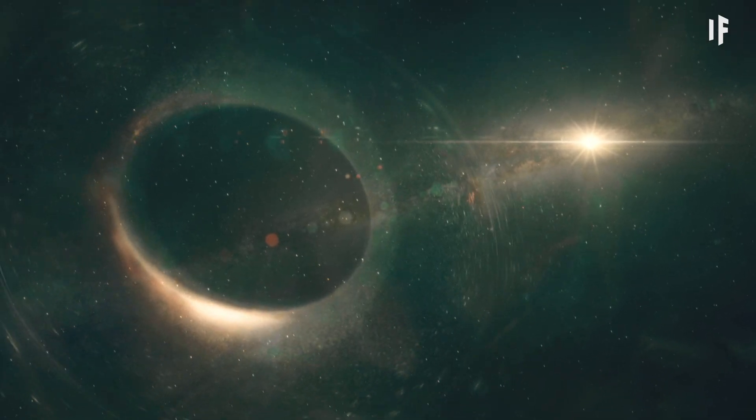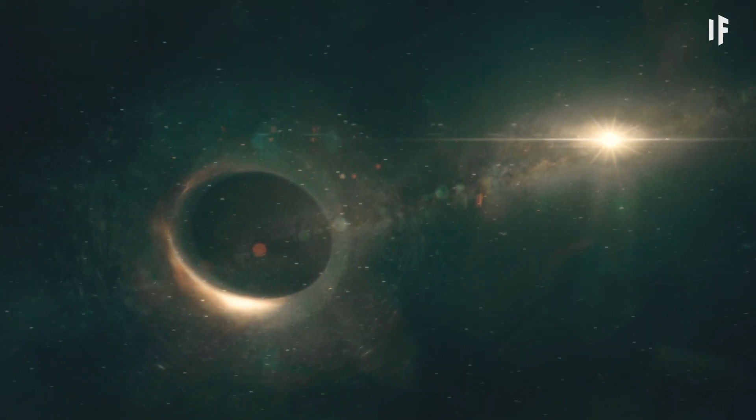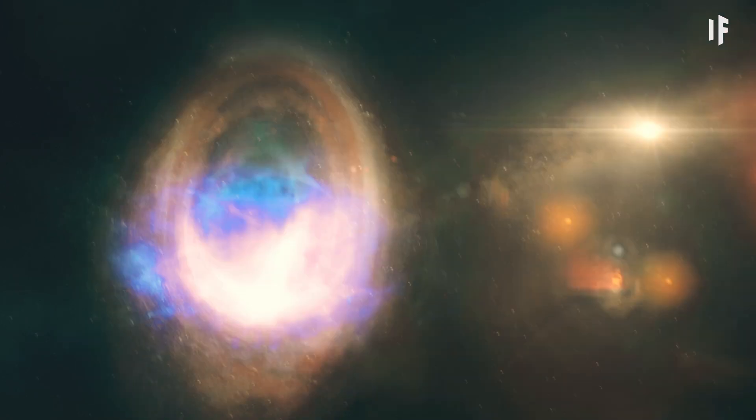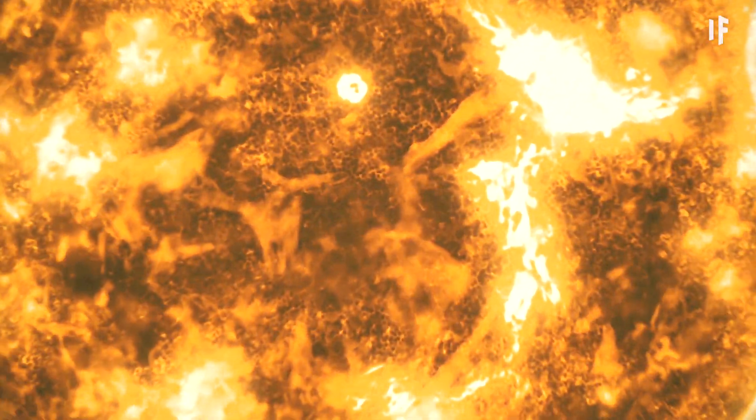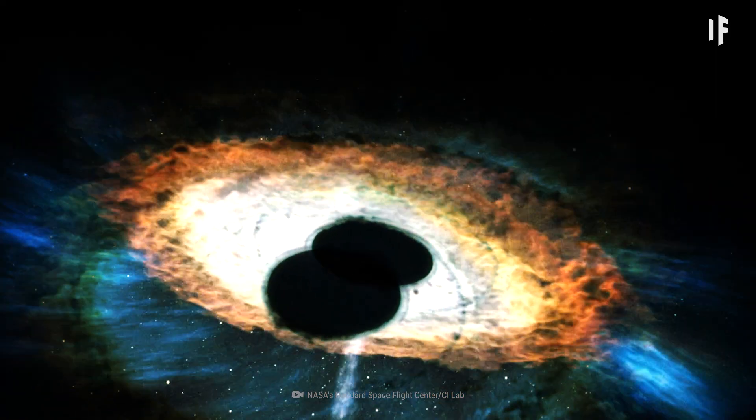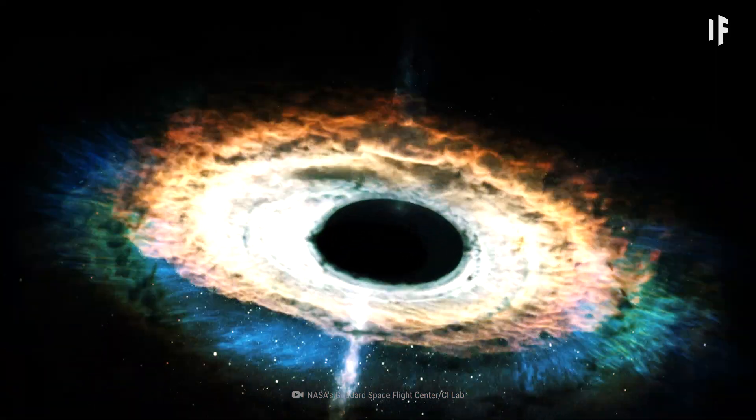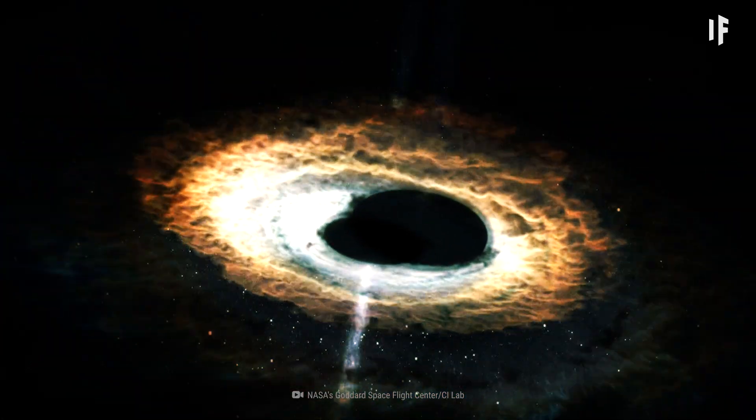A quasar is the result of two black holes colliding to form a supermassive black hole, with a central mass that outweighs our Sun by a billion times. When black holes merge, everything goes out of whack. The two black holes begin to consume all the gas and dust from each other, along with anything else in the area.